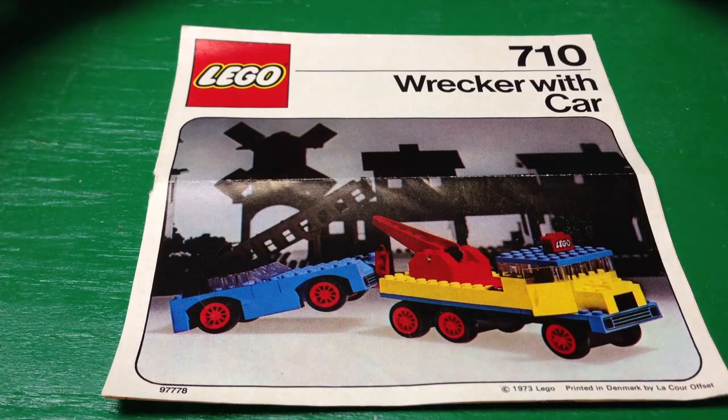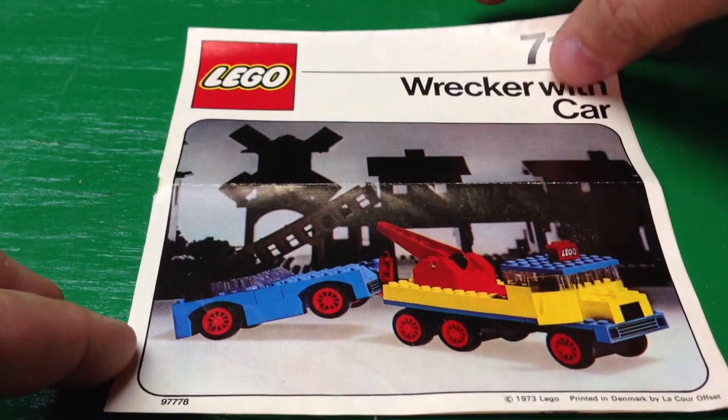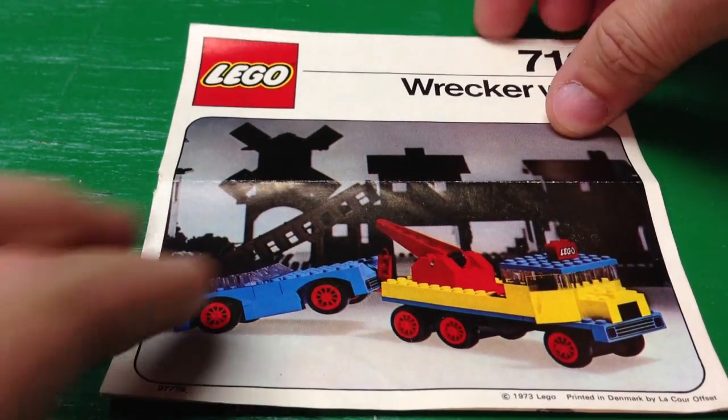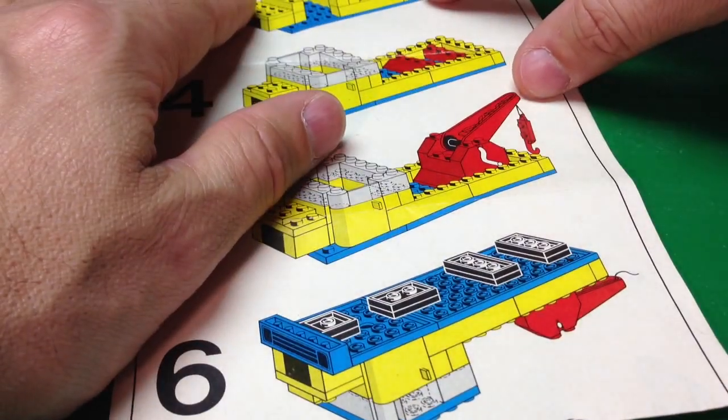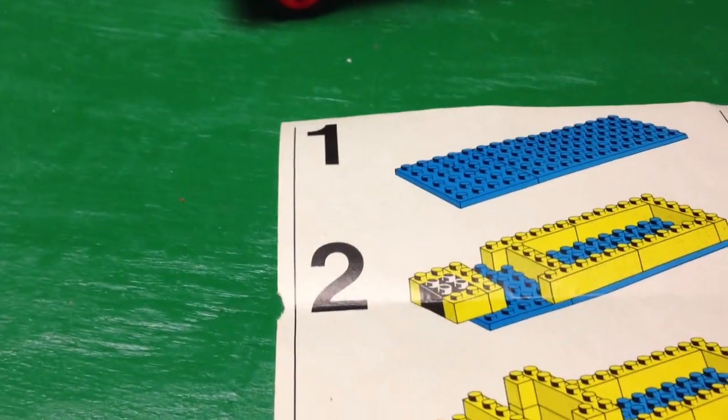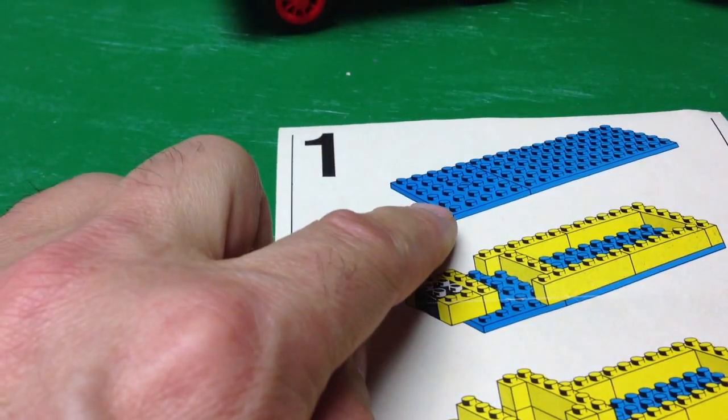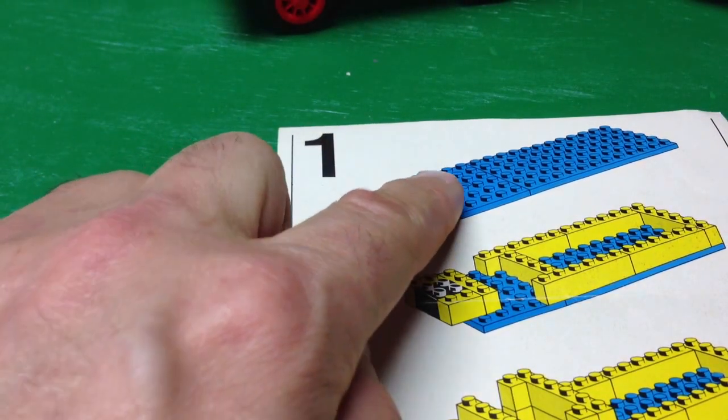First, I'll show a close-up of the instructions and see it's from 1973. These sets have these base plates that have a hole in them. This is a 5x6 with a hole.